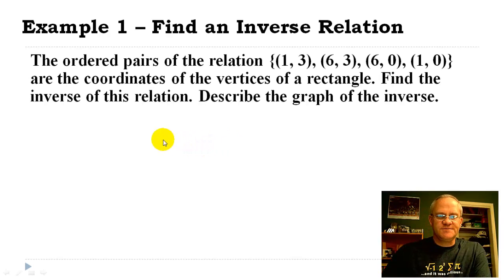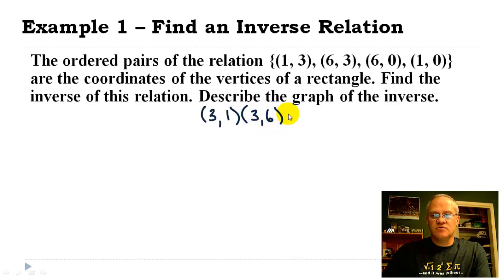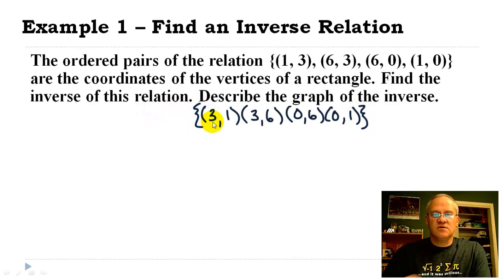Alright, so let's take a look at this. We've got the ordered pairs: (1,3), (6,3), (6,0), (1,0) — it's a rectangle. And we want to find the inverse. This is not very difficult. All we do is say the inverse of (1,3) would be (3,1), (6,3) would be (3,6), (6,0) would be (0,6), and (1,0) would be (0,1). So that's our new relation that is an inverse to the other one.